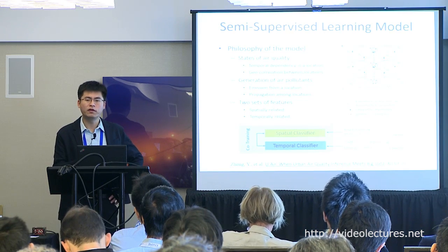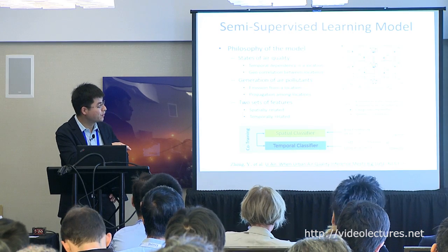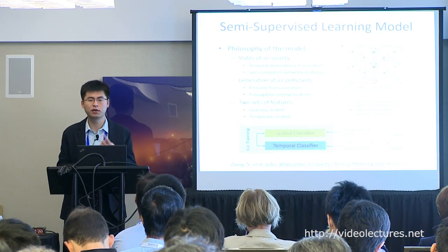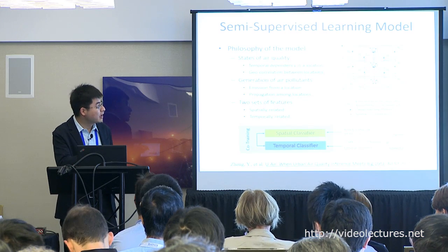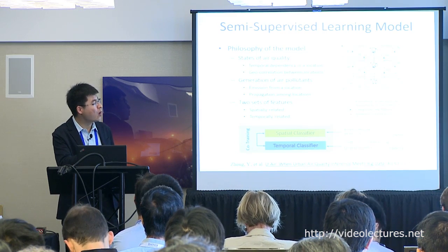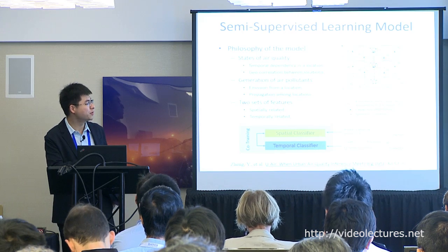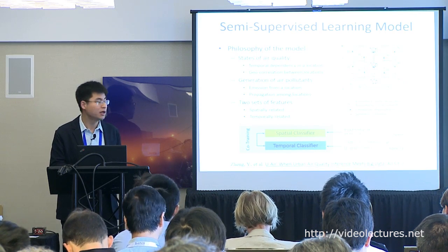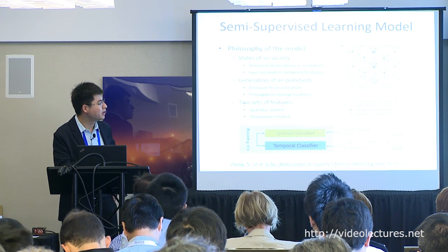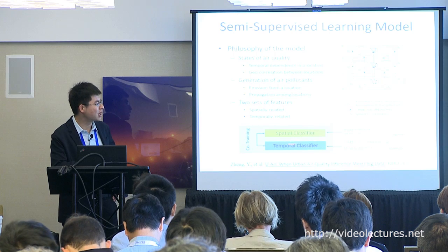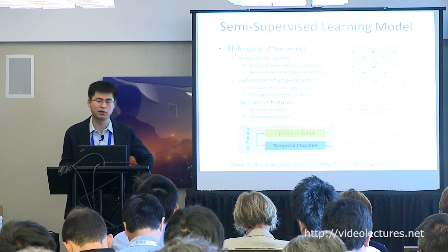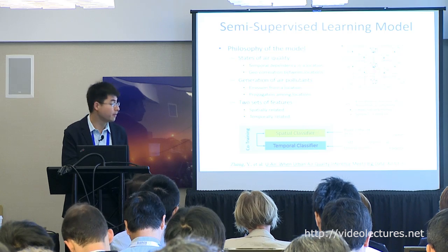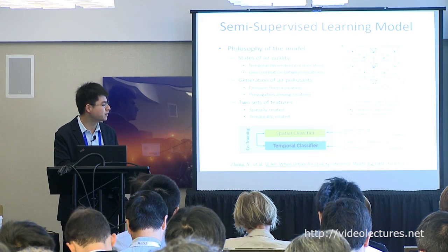Second, air quality at different locations has spatial correlations, denoted by red arrows, because air pollutants may be blown from one place to another. A good model captures both the temporal dependency of air quality at the same location and the spatial correlation between different locations. We employ a semi-supervised co-training model with a spatial classifier to model spatial correlation, and a temporal classifier to model temporal correlation, with mutual reinforcement learning between them.